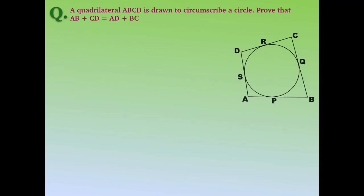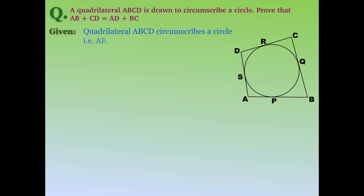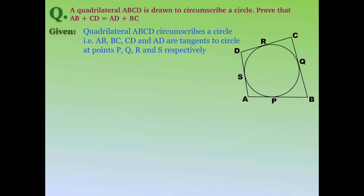The next question: a quadrilateral ABCD is drawn to circumscribe a circle. We need to prove that the sum of opposite sides are equal, that is AB + CD = AD + BC. Since quadrilateral ABCD circumscribes the circle, all four sides are tangents to the circle. AB is a tangent at point P, BC at point Q, CD at point R, and AD at point S.